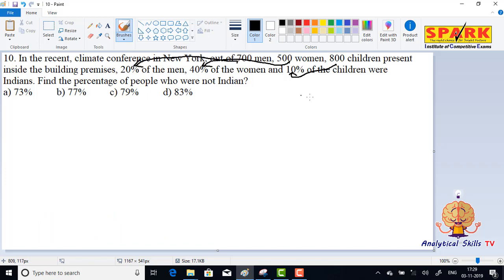So among the 700 men, only 20 percent are Indians. Among the 500 women, only 40 percent are Indians. Among the 800 children, only 10 percent are Indians. That means 80 percent, 60 percent, and 90 percent respectively are non-Indians from other countries from various countries in the world. So let me calculate: of the 700 men, 20 percent are Indians, so subtract this to find the others.